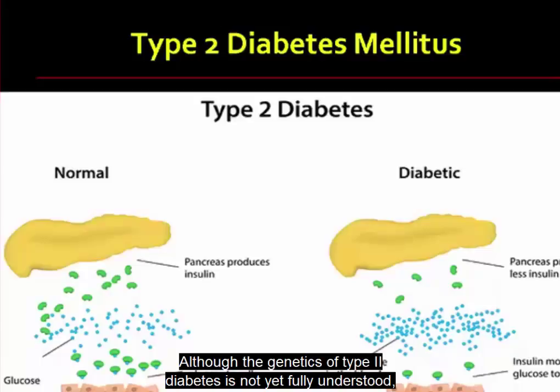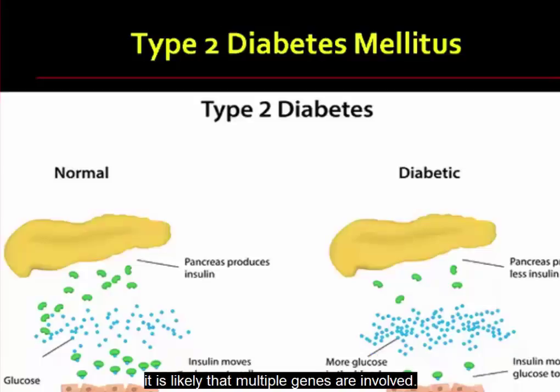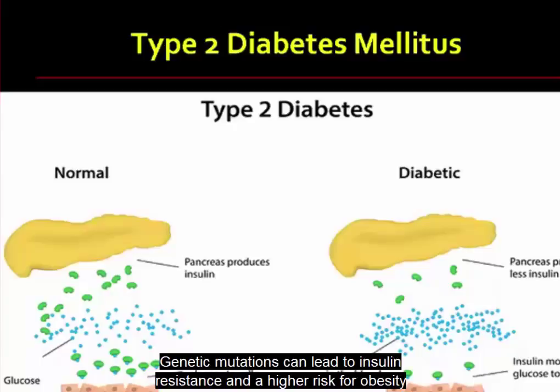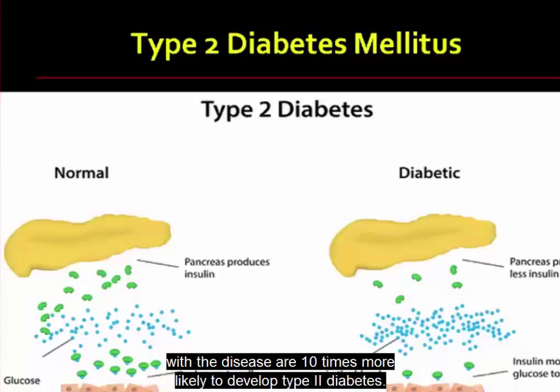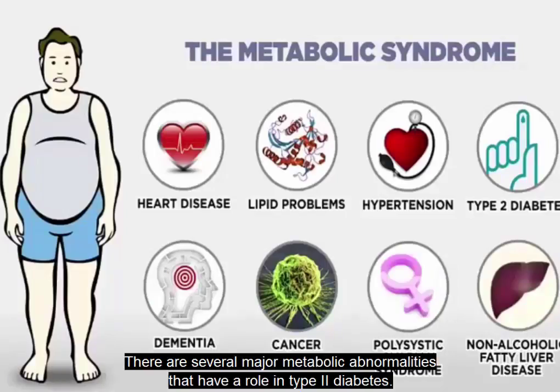Although the genetics of type 2 diabetes is not yet fully understood, it is likely that multiple genes are involved. Genetic mutations can lead to insulin resistance and a higher risk for obesity and have been found in many people with type 2 diabetes. Individuals with a first-degree relative with the disease are 10 times more likely to develop type 2 diabetes. There are several major metabolic abnormalities that have a role in type 2 diabetes.